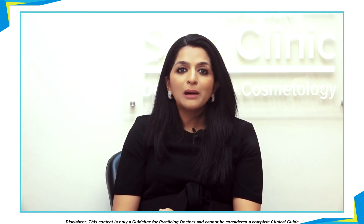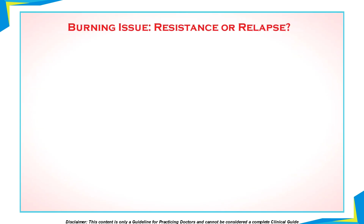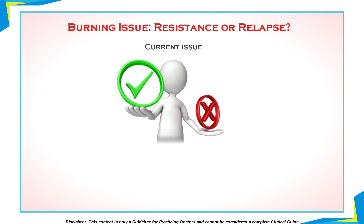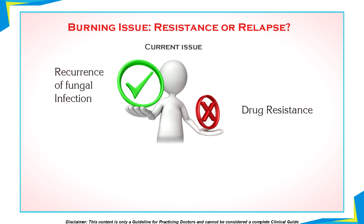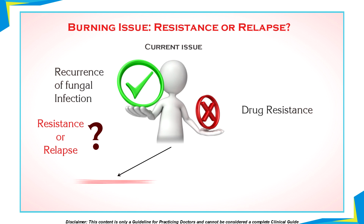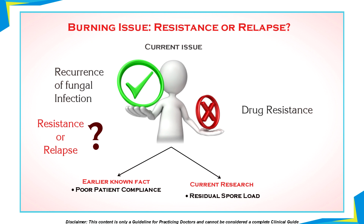I think all of us are now facing a big issue when it comes to treating fungal infection. There has always been a failure in getting to the right treatment based on the right diagnosis. The major issue now has been recurrence of fungal infection — and it is not drug resistance. Therefore, it is important to ascertain whether it is a relapse or a treatment failure before deciding on the right type of treatment. Initially, we all thought that poor adherence to treatment or poor patient compliance played an important role in relapse and incomplete clearance of fungal infection. However, recent research has shown that the residual spore load plays a very important role in reinfection as well as recurrence.